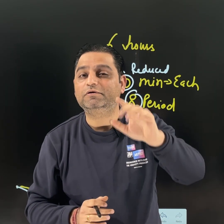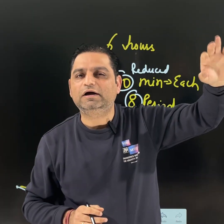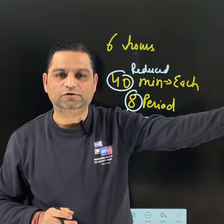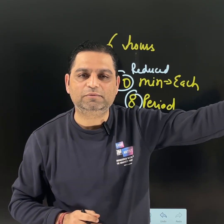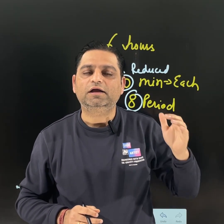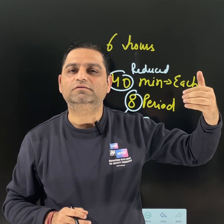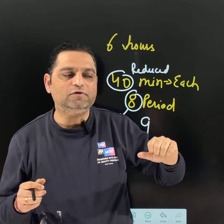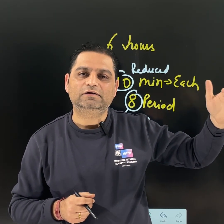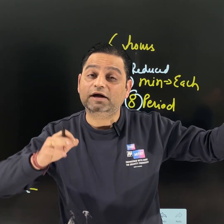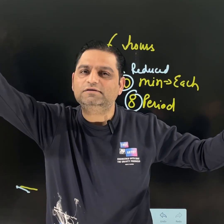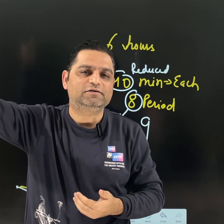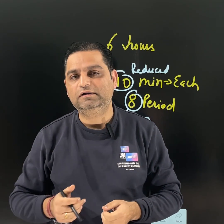Let me give one last example for direct proportion. Suppose you are going at a uniform speed of 40 km per hour in your car. If you drive for 2 minutes, you cover some distance. But if you drive for 5 minutes, you cover more distance. More time you spend driving, more distance you cover. So that becomes a case of direct proportion.